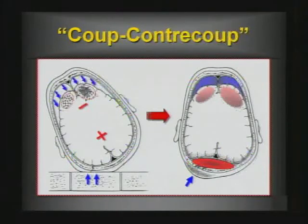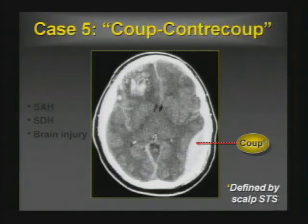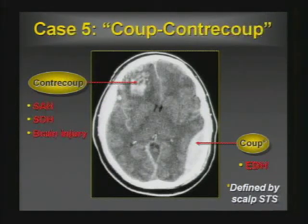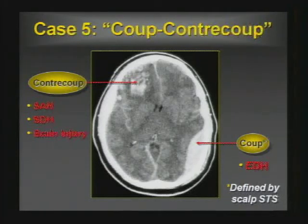So the coup-contra-coup: coup at the site of impact, contra-coup where brain injury tends to occur. The coup site is defined by scalp soft tissue swelling and epidural hematoma. The contra-coup site, 180 degrees opposite, is where contusion hematomas, subarachnoid hemorrhage, and subdurals tend to occur.